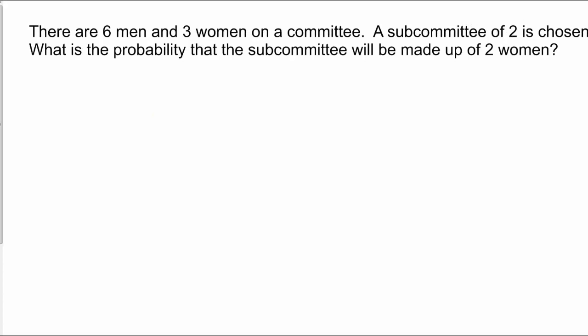Next, we jump into more of a combinations type of question. We have six men, three women, and a committee. Subcommittee of two is chosen. We want to know the probability of the subcommittee being made up of two women. So we need, once again, the likelihood of two women being drawn over the total number of drawing two people. So what we're going to do is we're going to calculate the possibility of two women being drawn. And to ensure that the women are being drawn, we have to pick from the group of women.